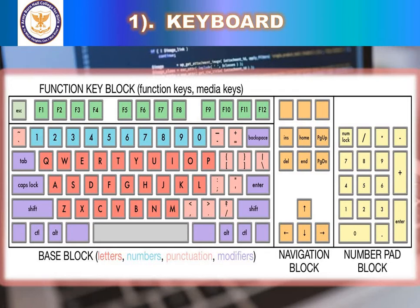A computer keyboard is a hardware device that functions in accordance with instructions made by the user. It comprises circuits, switches, and processors that help in transferring keystroke messages to the computer. The act of using a keyboard is called keyboarding. Keyboards are generally plugged into a computer through a USB port, and they are used for tasks such as typing in MS Word, accessing menus, MS Excel, and other software programs.